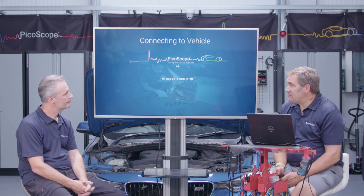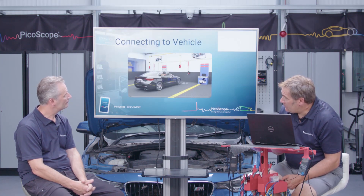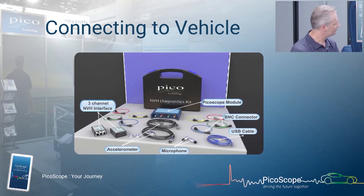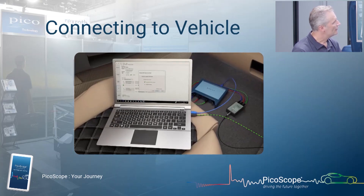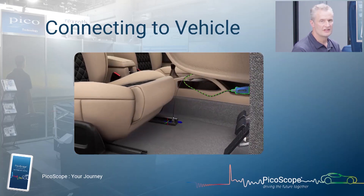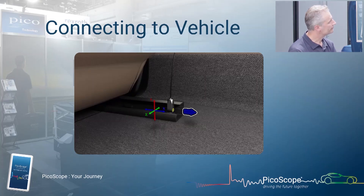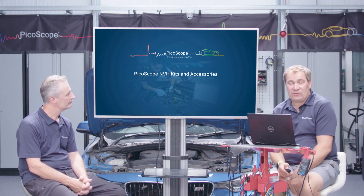A couple of slides on connecting to the vehicle. We're going to take our car on a road test. Here's our kit content — we've opted for the standard kit, which includes two interfaces, two microphones, and two accelerometers, so we can have any combination connected at one time. Here we've opted for a three-axis measurement mounted on the seat frame — that's generally the first road test you carry out. The accelerometer screw thread should be facing forward and mounted vertically.